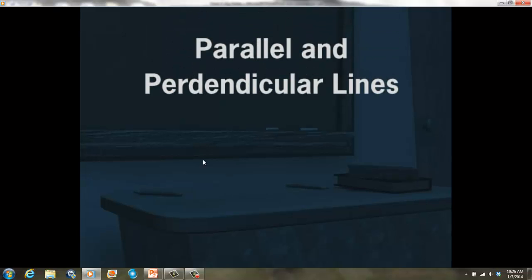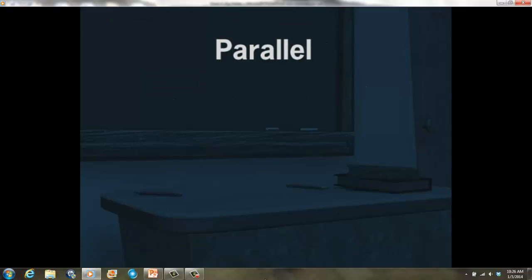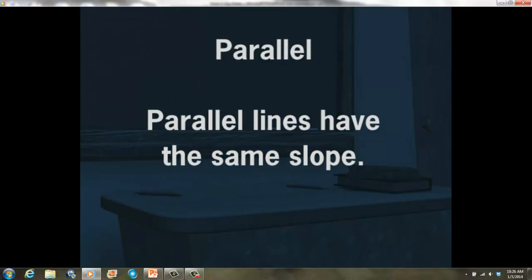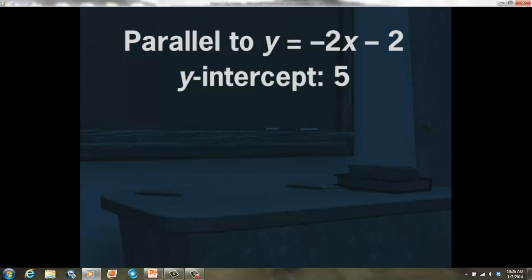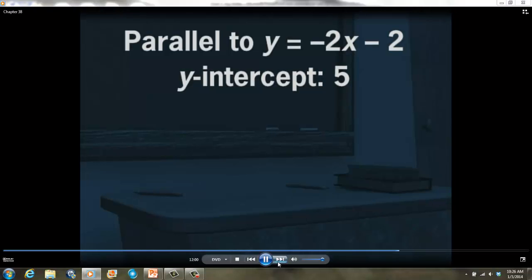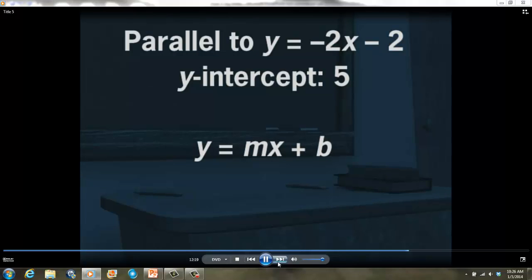Let's extend our study to include parallel and perpendicular lines. If two lines have the same slope, they are parallel. What is the equation of the line that is parallel to y equals negative 2x minus 2 and has a y-intercept of 5? The slope of the given line is negative 2, and parallel lines have the same slope, so our line also has a slope of negative 2. With m equal to negative 2 and b equal to 5, the equation is y equals negative 2x plus 5.